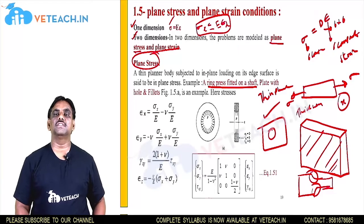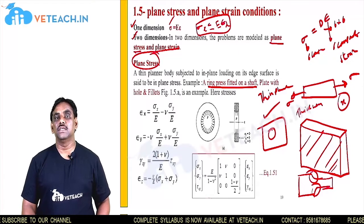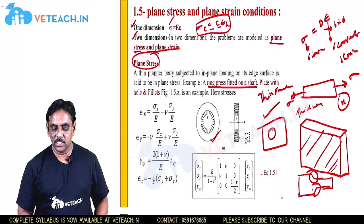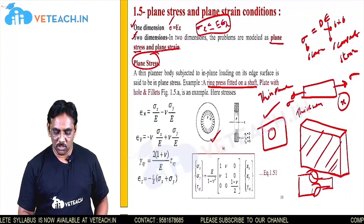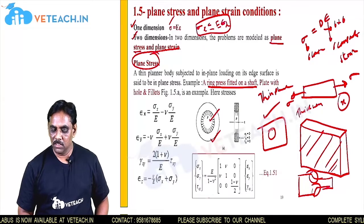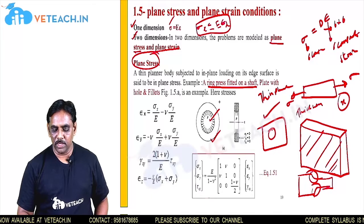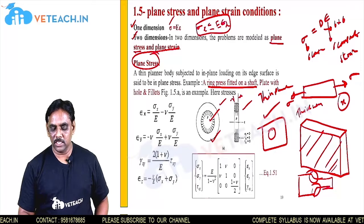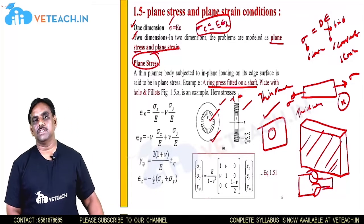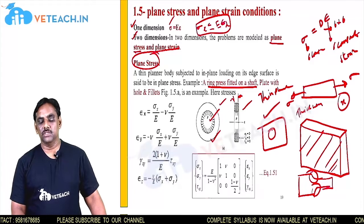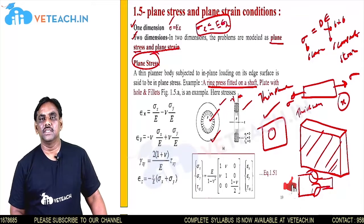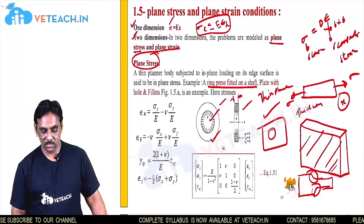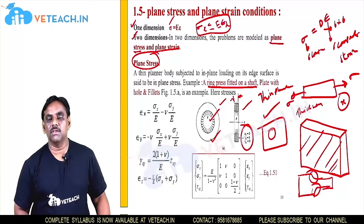Plane stress means it has stresses only in two directions; the stress in the other direction will be 0. Consider the ring precipitated on a shaft — the internal part is subjected to pressure. You can see the front view as well as the side view. It is subjected to internal pressure and the thickness is very small. We can consider it as plane stress because the area of cross section is larger compared to the thickness, so the plane stress condition applies. The stress along the z direction will be 0 because the thickness is very, very less.